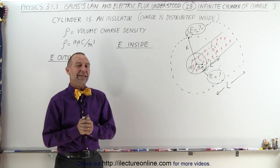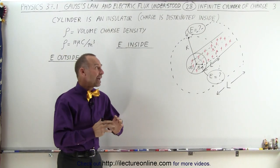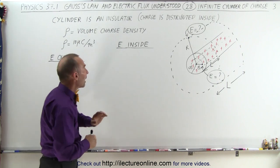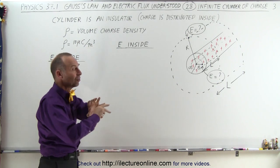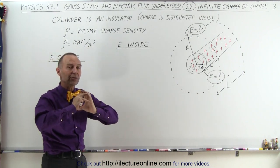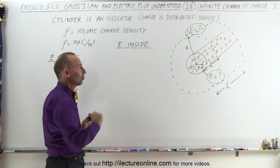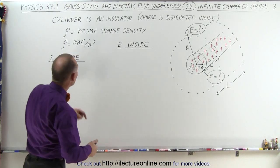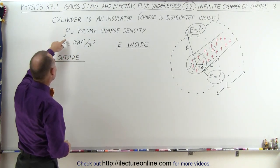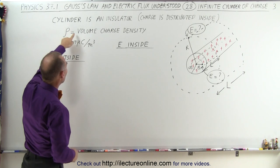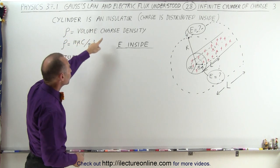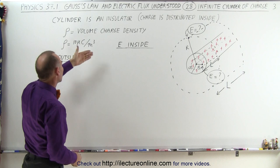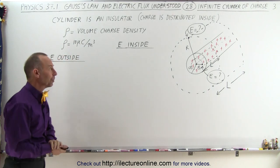Welcome to Electronline. We have a cylinder that's no longer a conductor, but now it's an insulator, which means the charge is now distributed throughout the entire cylinder. We'll assume it's evenly distributed such that rho, the volume charge density, is given as 10 microcoulombs per cubic meter as an example.